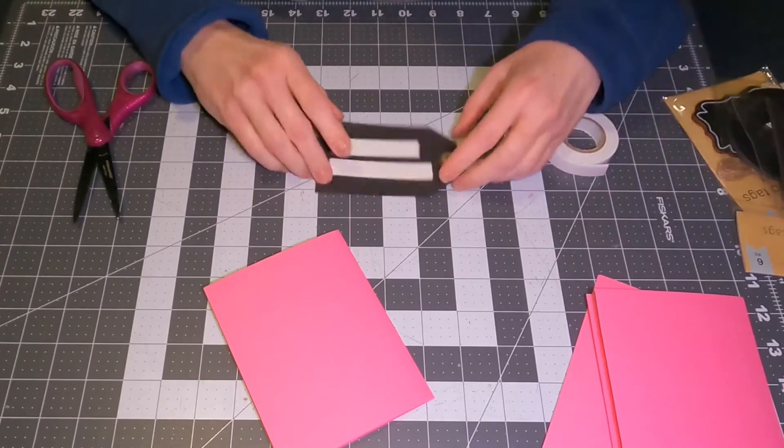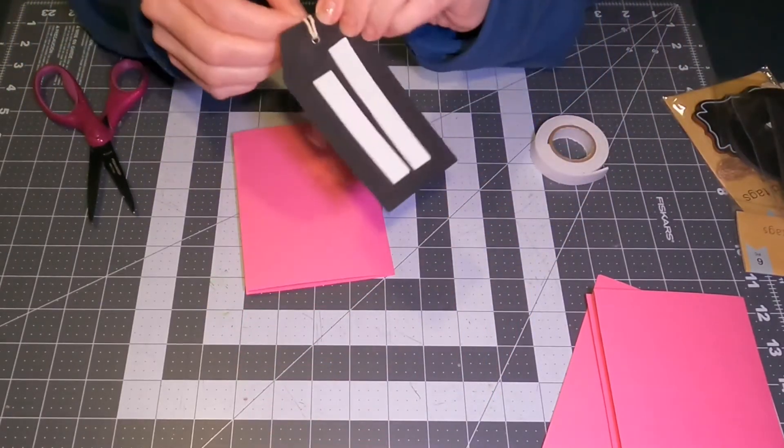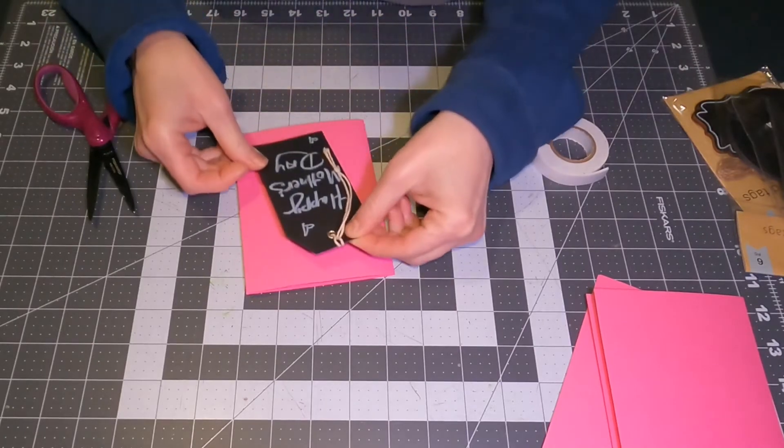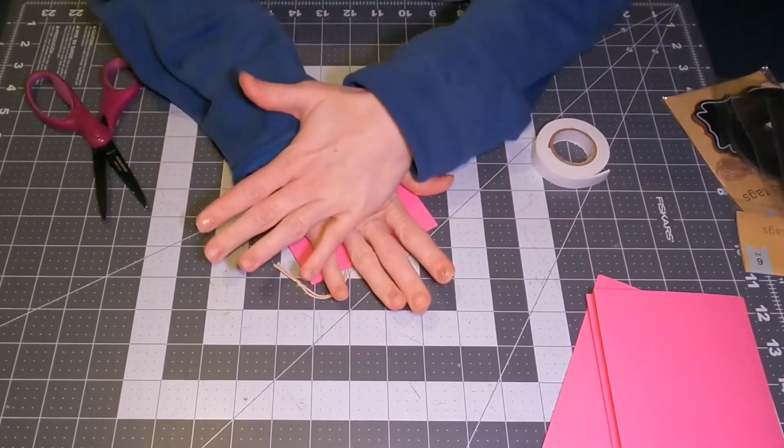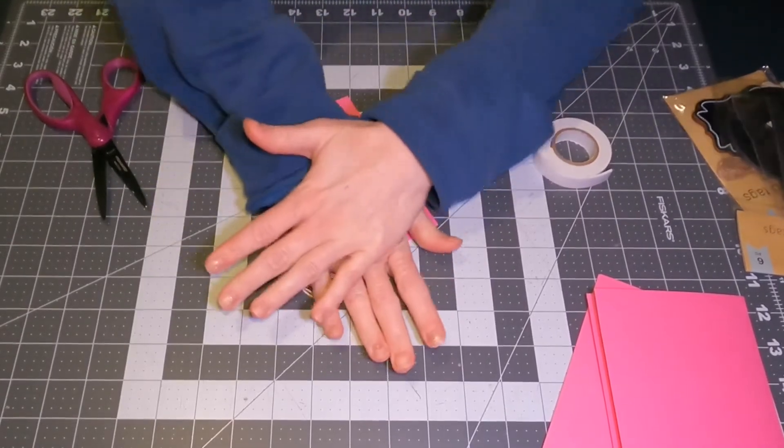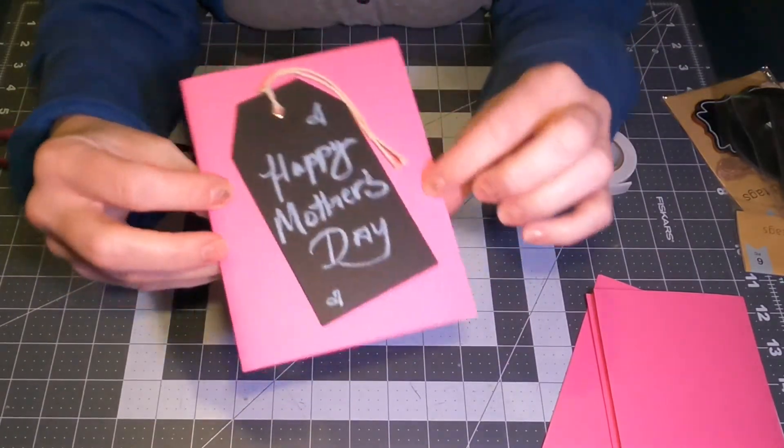Very easy. You just want to press down really good, and the chalk did not smear at all. I was worried about that, but it did not at all. So you just want to put that down wherever you're wanting it and then press down a little bit. I flipped it over just to help from messing it up and there it is attached.